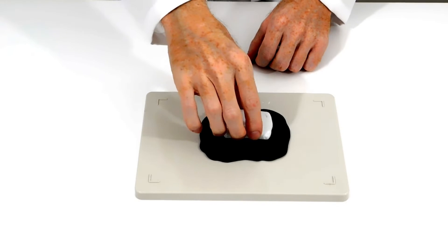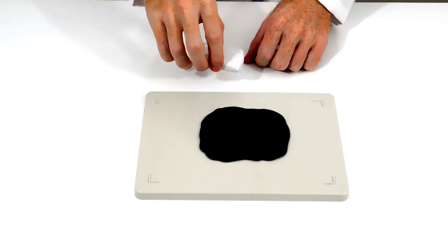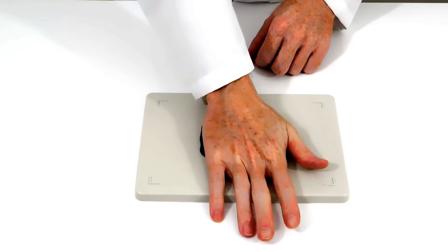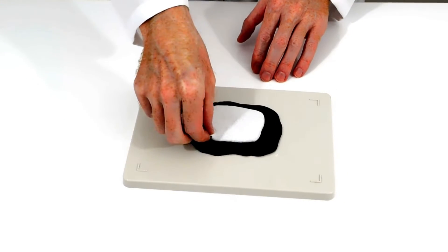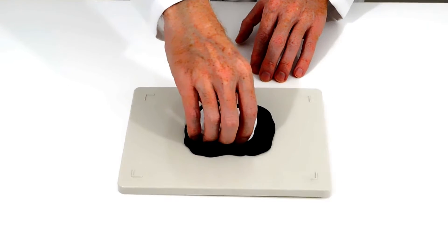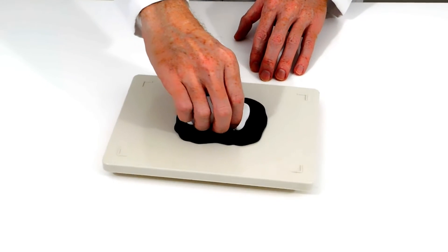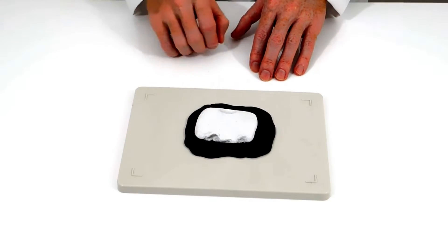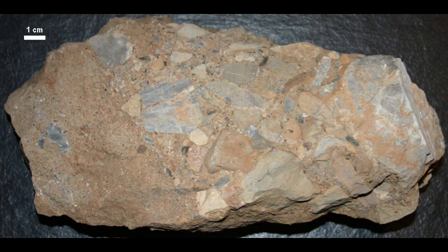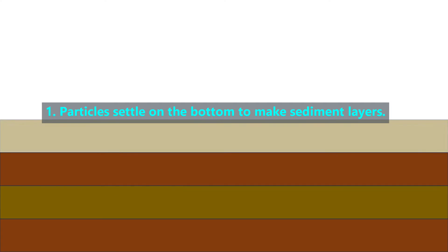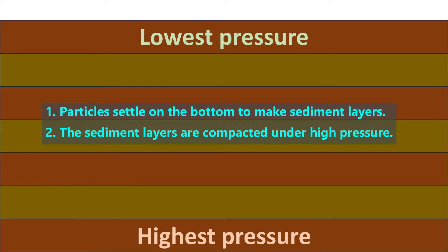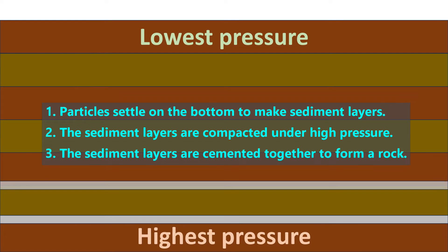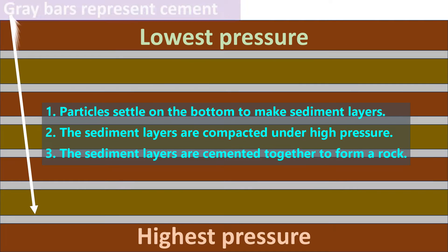Here is one way to remember this. When we place white clay on black clay, they don't stick together. But if we push down with high pressure, then we are compacting the layers together. That compaction then creates a bond so that the white and black clay stick together — even though we never added cement or glue. We can summarize the three steps of making sedimentary rocks as: 1. Particles settle on the bottom to make sediment layers. 2. The sediment layers are compacted under high pressure. 3. The sediment layers are cemented together to form a rock.